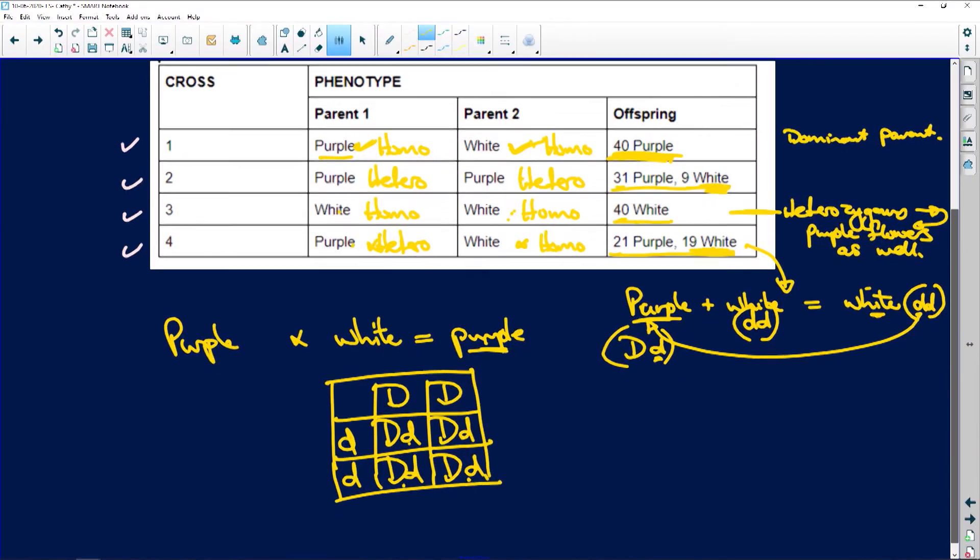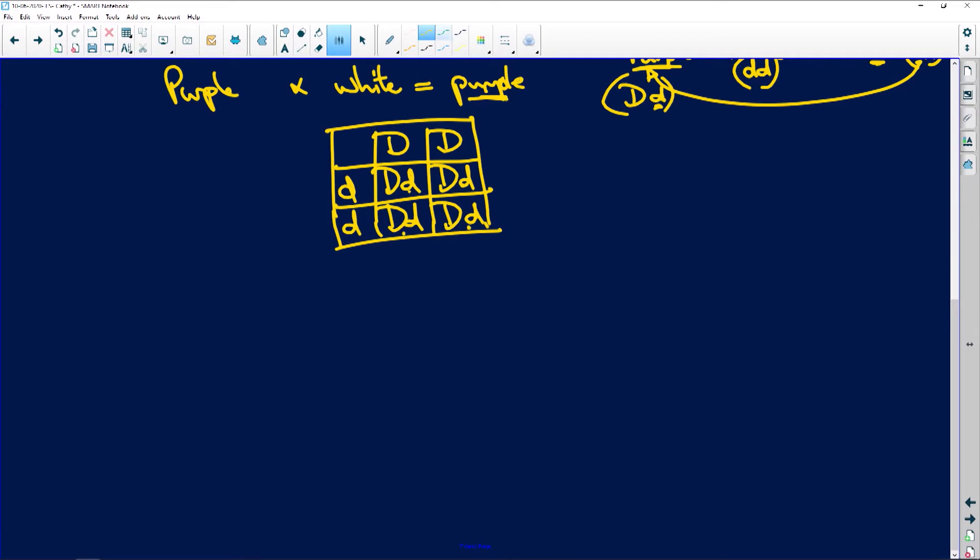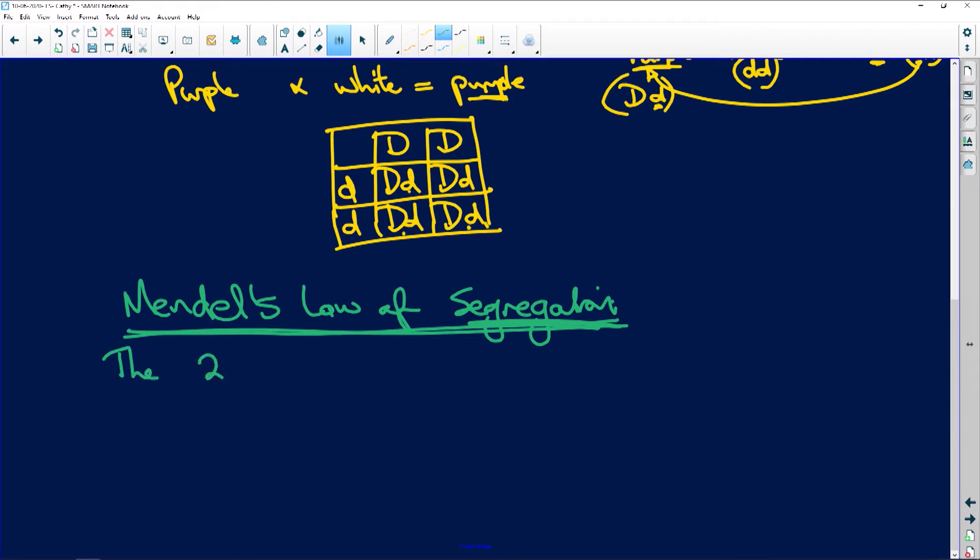Then state Mendel's law of segregation. People, you must know this. Let's just get ourselves some space here. When we do Mendel's law of segregation, this is very important. And you actually learned this in meiosis as well. It says the two alleles for a characteristic separate during meiosis.